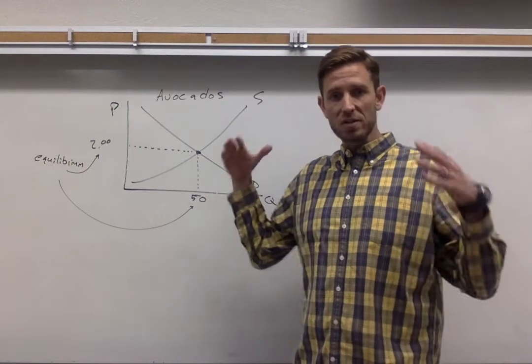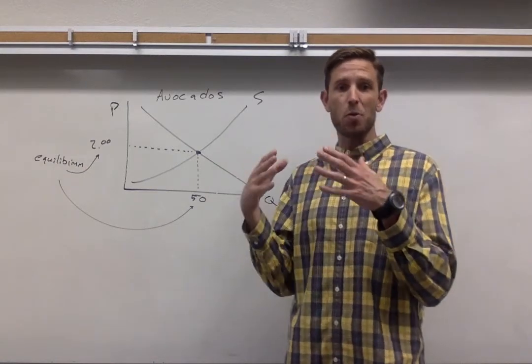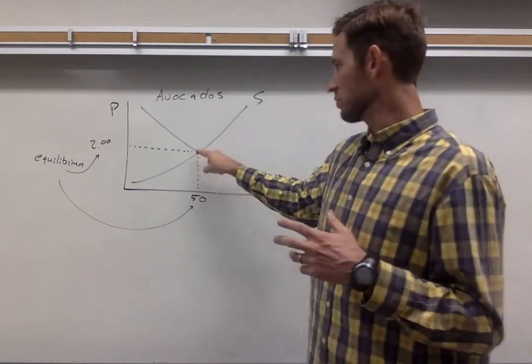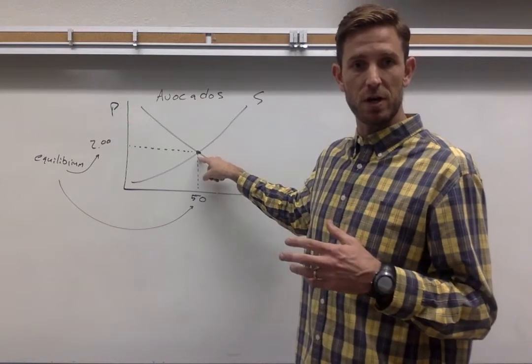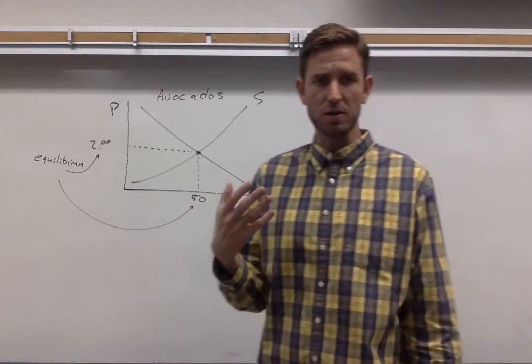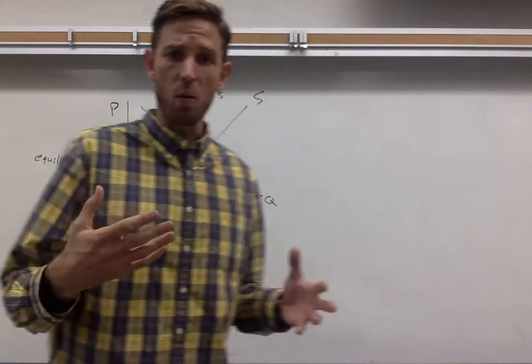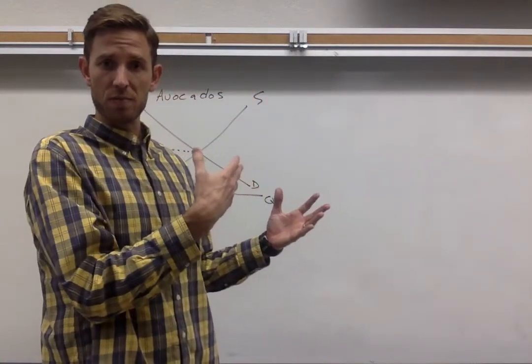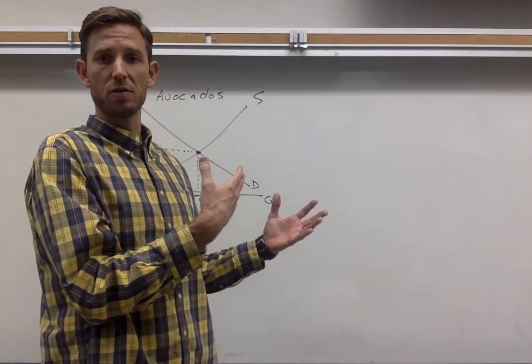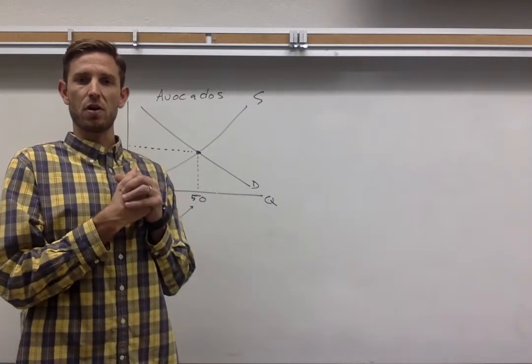So why is that the case? We're always going to move to or gravitate towards this equilibrium. What's so great about this particular spot? How do we know we end up here? So for the purposes of our demonstration, let's just assume that we're not at this equilibrium. We're not observing two dollars for avocados. Let's see what would happen if we saw a different price.